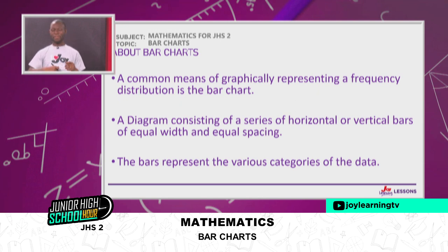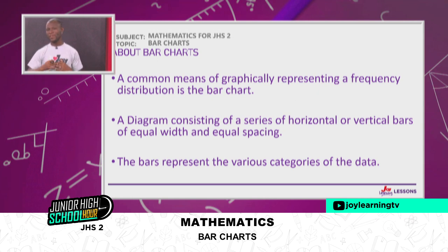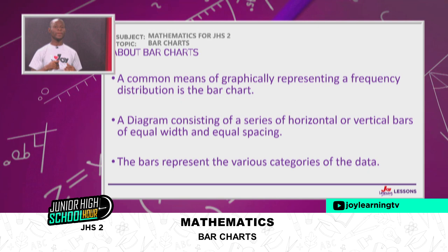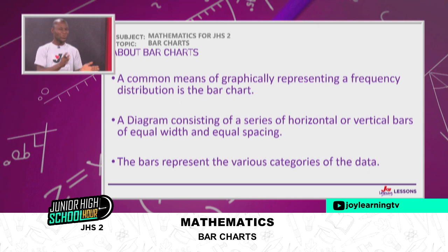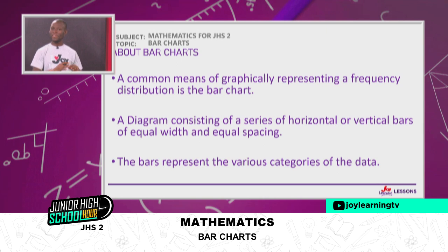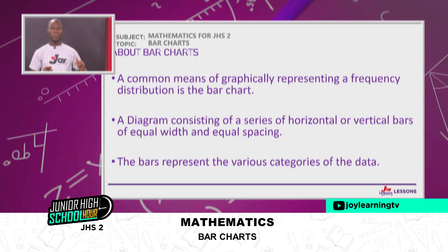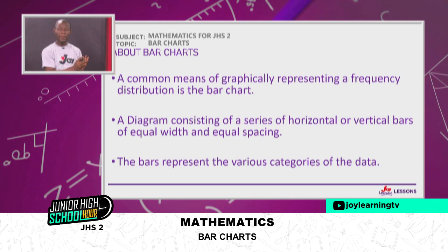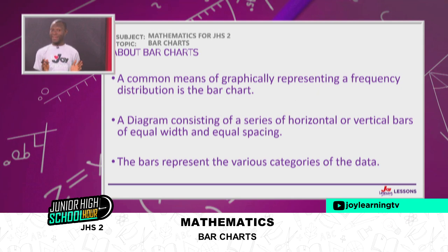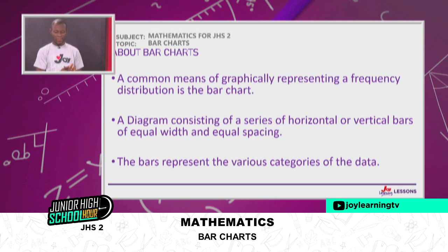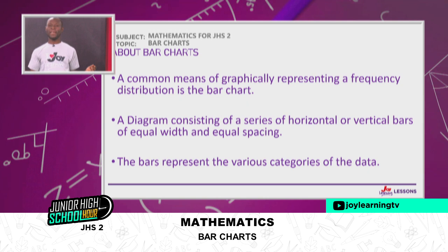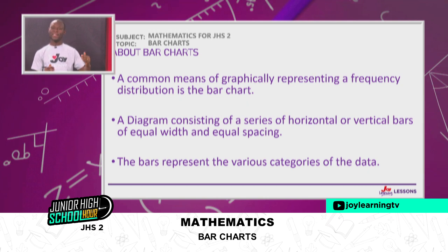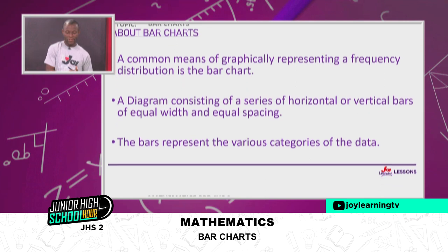The bars represent the various categories of the data. For instance, if I was looking at how much rain fell within a certain period during the days of the week — on Monday there was 800 measure of rain, on Tuesday there was 900 — each bar represents a category. The more the value, the higher or the longer the bar.